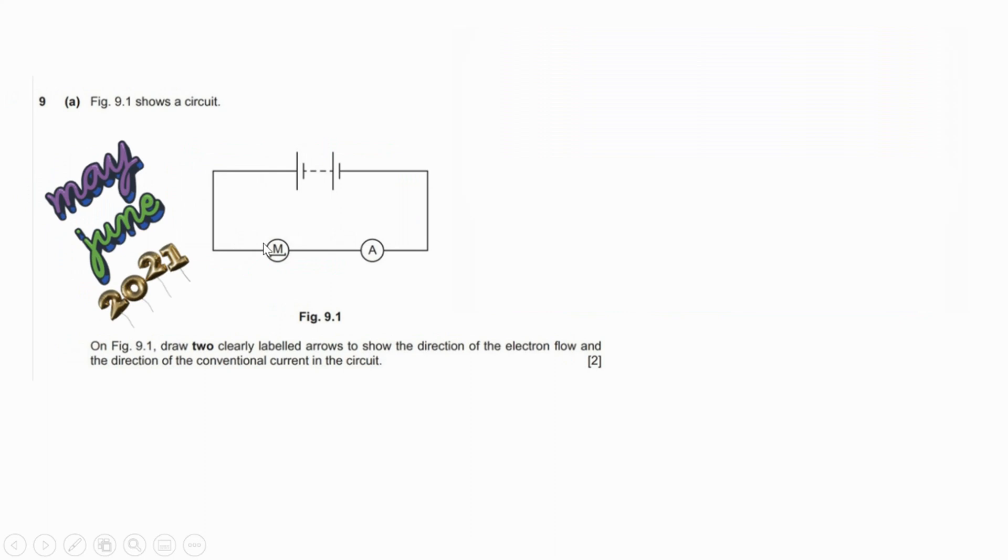Finally, here I can draw two arrows on the same diagram. The red one is the flow of electrons and the green one is the conventional current.